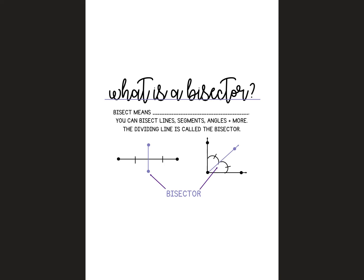The word bisect means to cut into two equal parts, and you can bisect lines, segments, angles, and other things also. The line that's doing the dividing, so the thing that's cutting it in half, is called a bisector.